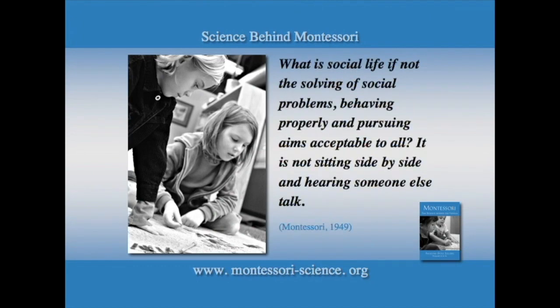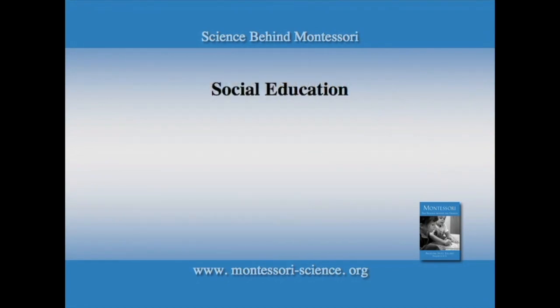By elementary they're working together all the time, and the system is able to work much better with how we know children develop than the traditional model. In response to the criticism that her schools are not social, Montessori said, 'But what is social life if not the solving of social problems, behaving properly, and pursuing aims acceptable to all? It is not sitting side by side and hearing someone else talk.' So how does one accomplish social education in a Montessori classroom? For one, there are these three-year age groupings — three to six, six to nine, nine to twelve.